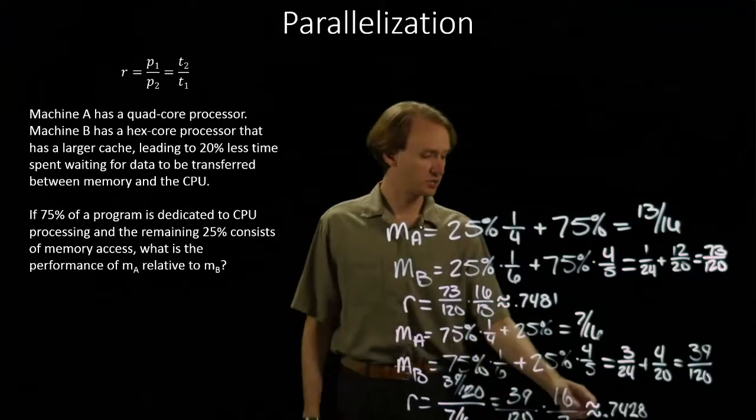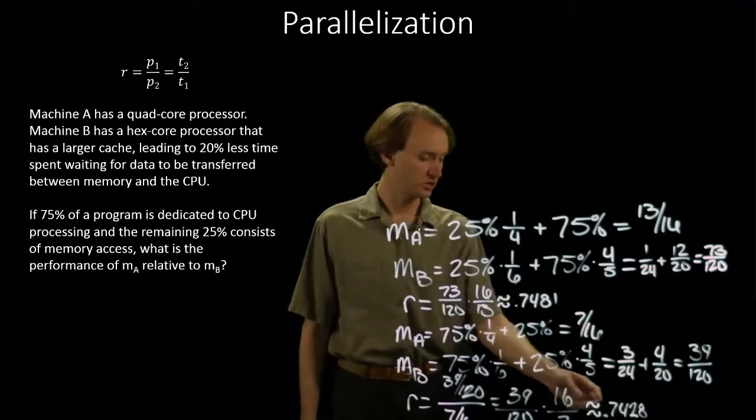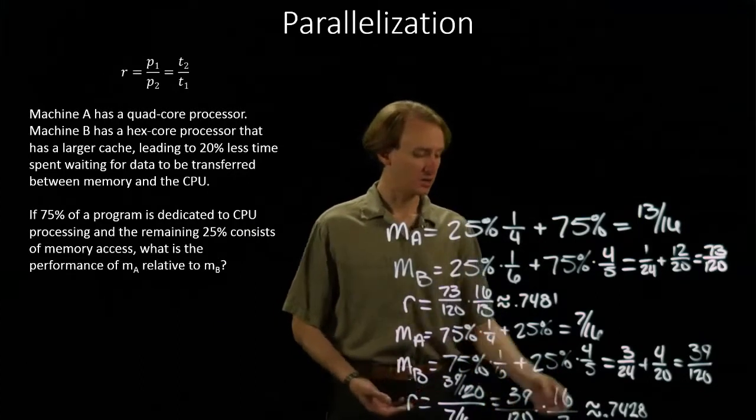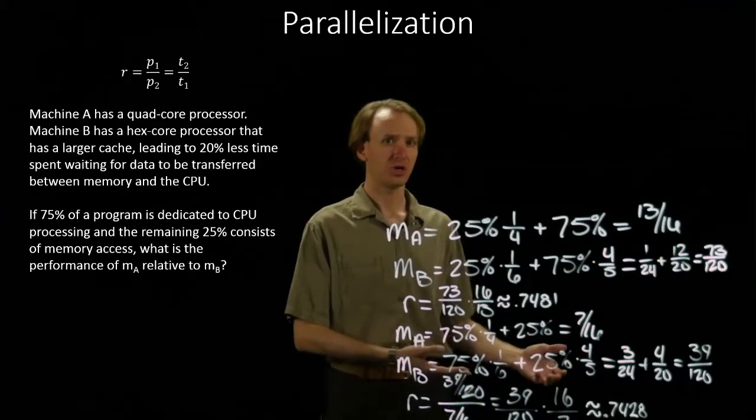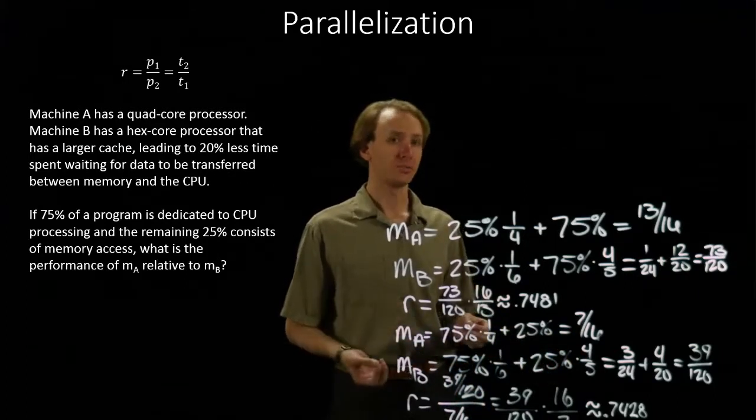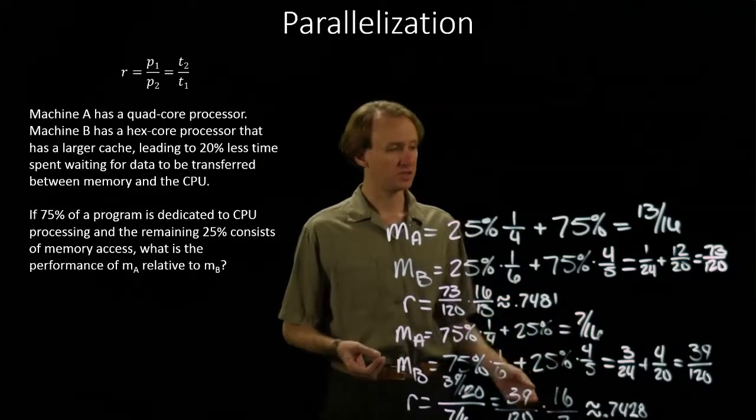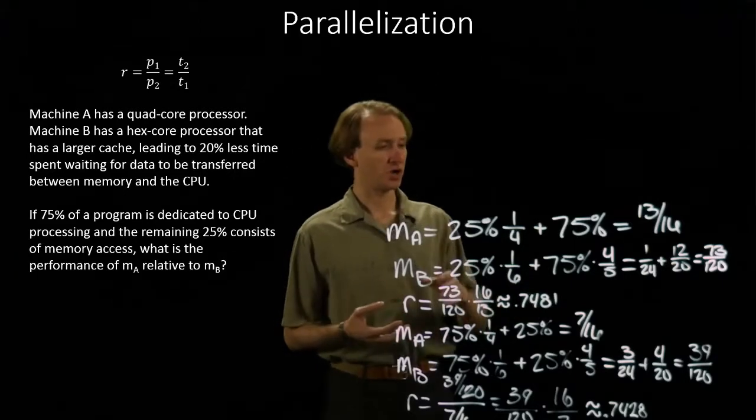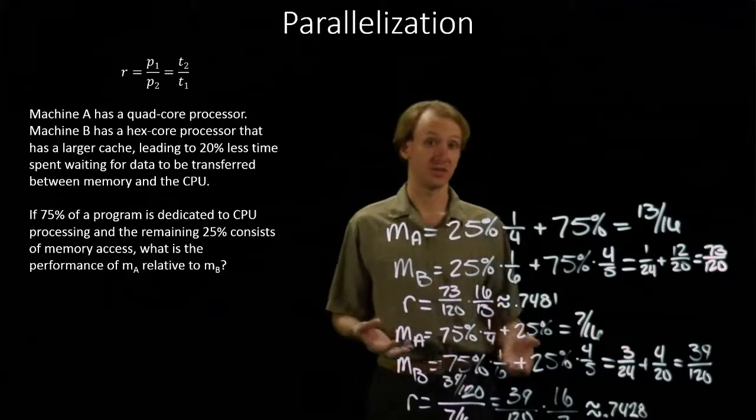So there's a slight change between the first situation and the second. Machine B comes out slightly ahead on the second situation where there's more time spent on the CPU than on memory. Not a whole lot. For the most part, the speed up here is pretty evenly distributed. For machine B, it gets pretty even speed up across memory and CPU. But there is some difference there.